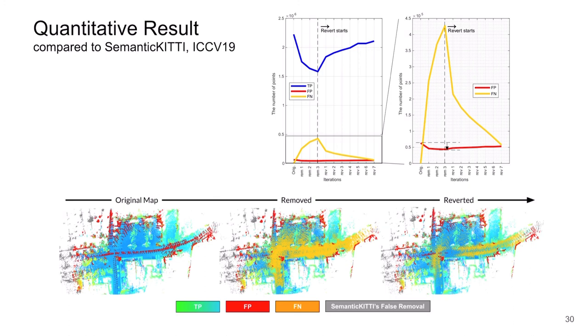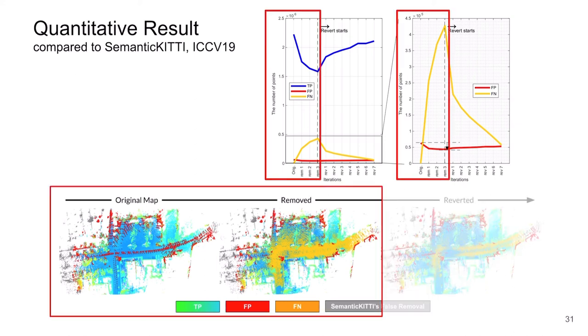Along with the previous qualitative results, here we provide a quantitative result. By using the semantic label as the ground truth of the dynamicity of points, we track the pointwise true and false estimation over the Removert iterations. Here, we set arbitrarily 3 repetitions for removing and 7 iterations for reverting to track the tendency as much as possible. But we note that actually not even 7 revertings are practically required. Here, we define that static is positive and dynamic is negative.